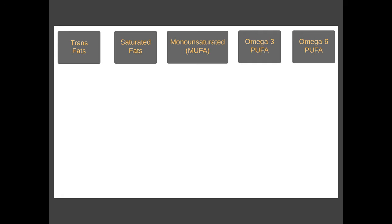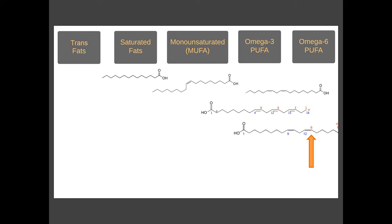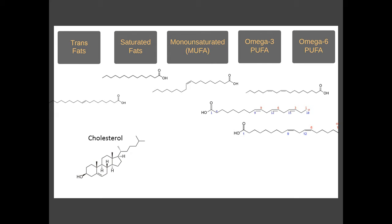Why do fatty acids have chemistry names? With saturated fats, all the bonds between carbon atoms are saturated as single bonds — there are no double bonds. Monounsaturated fats have one double bond between carbon atoms. Polyunsaturated fats have multiple double bonds. Omega-3s have the first double bond at the third atom, omega-6 at the sixth atom. Trans fats have double bonds but in a trans configuration rather than the more typical cis configuration, and the great majority of trans fats are formed artificially by hydrogenation.